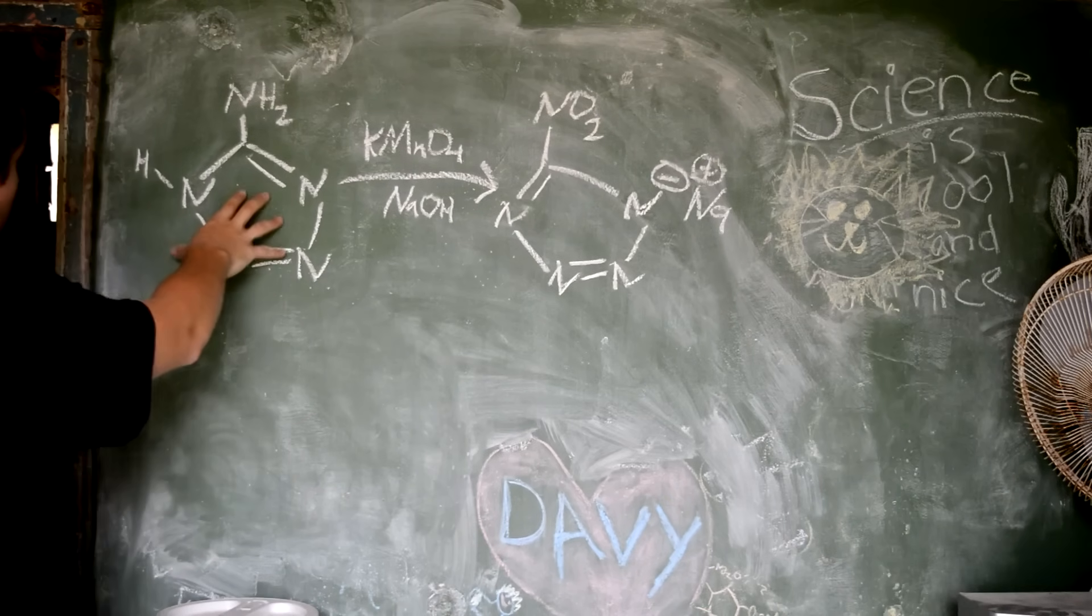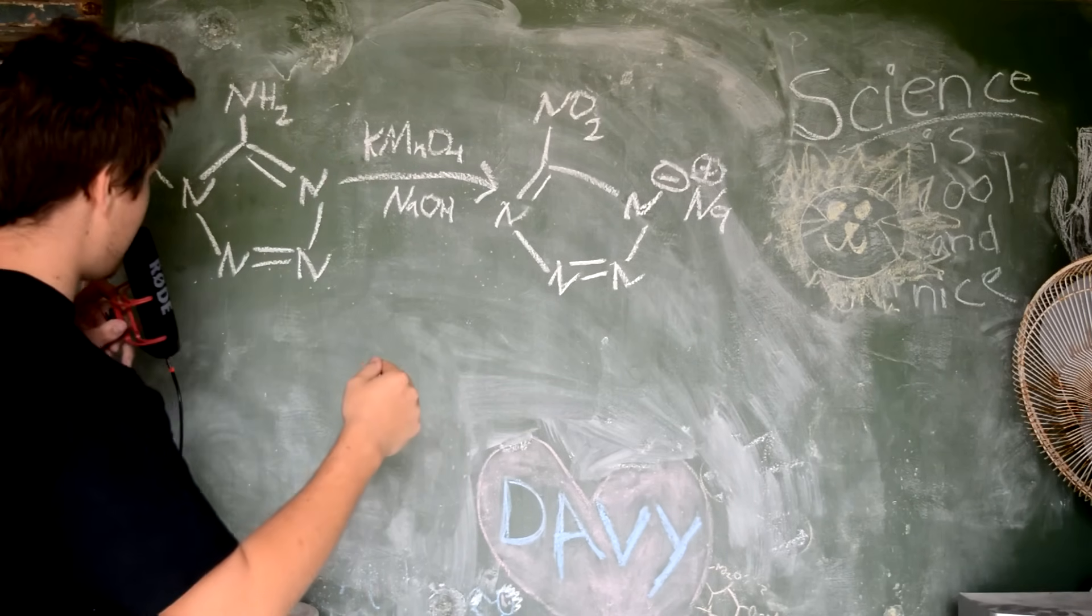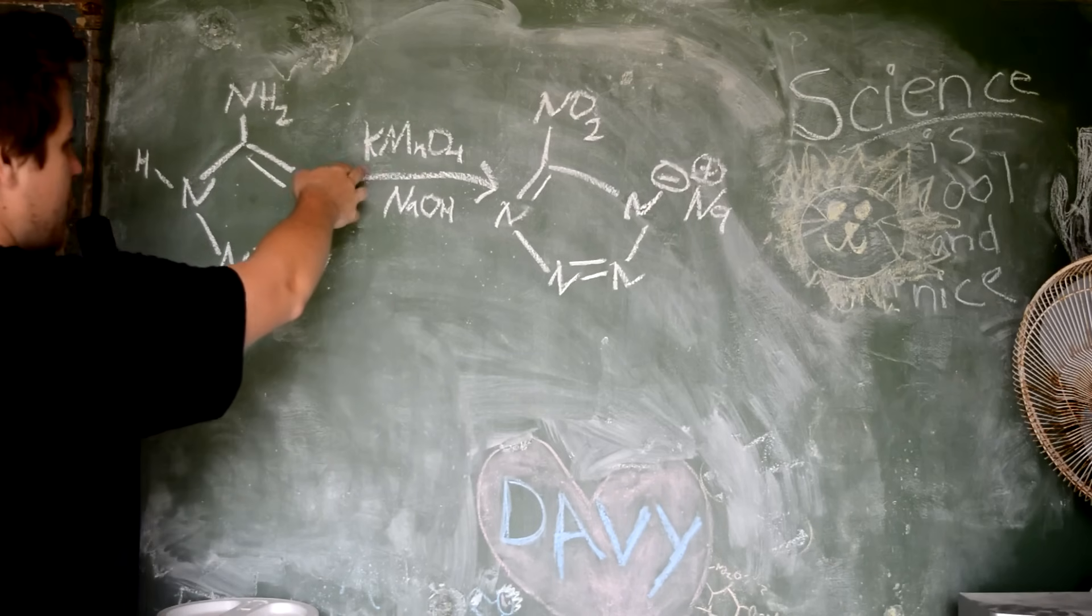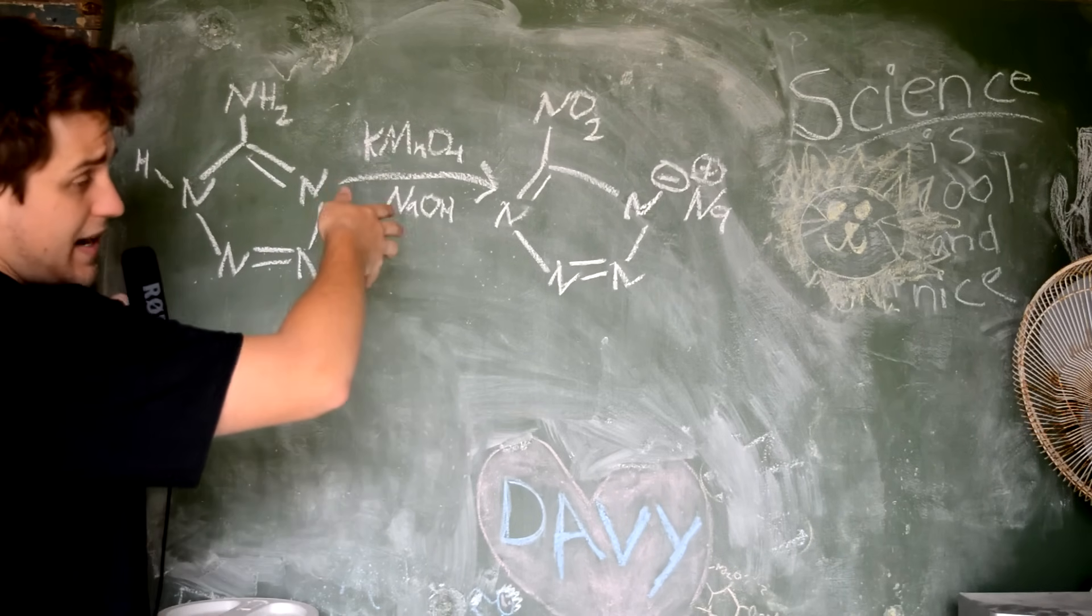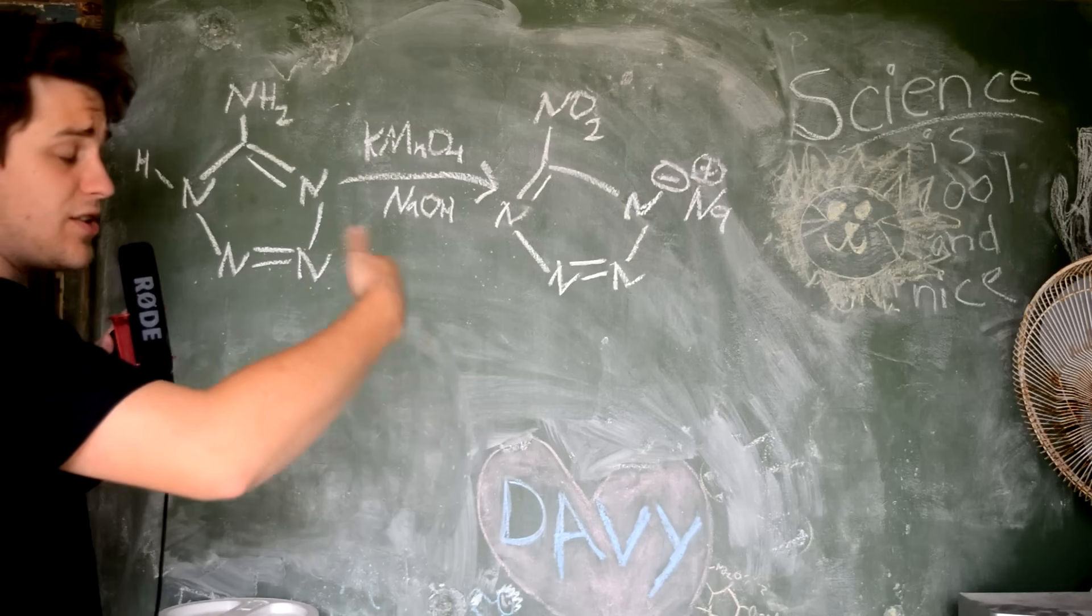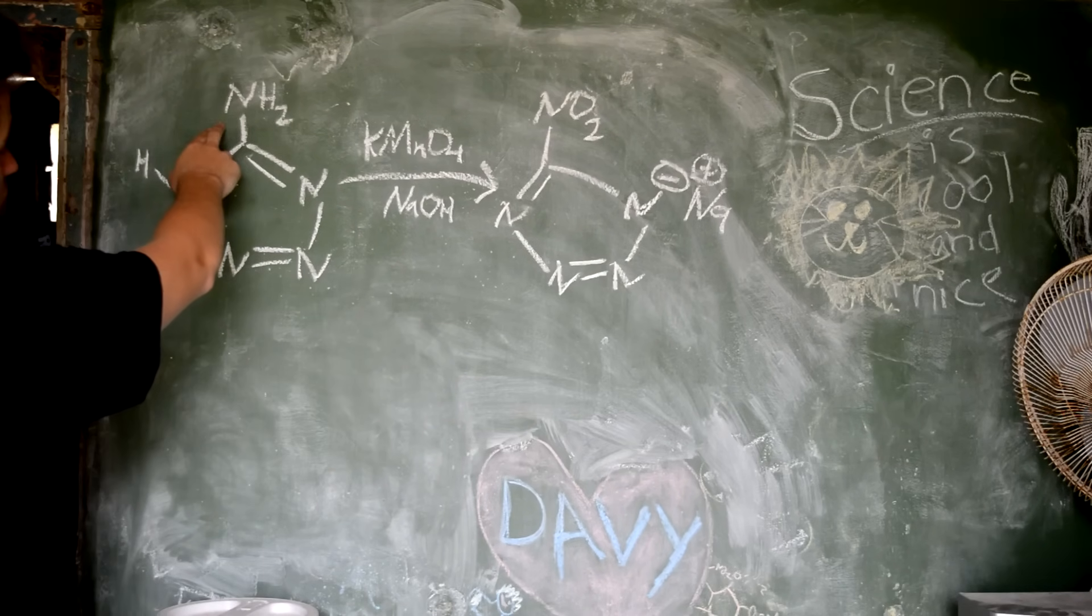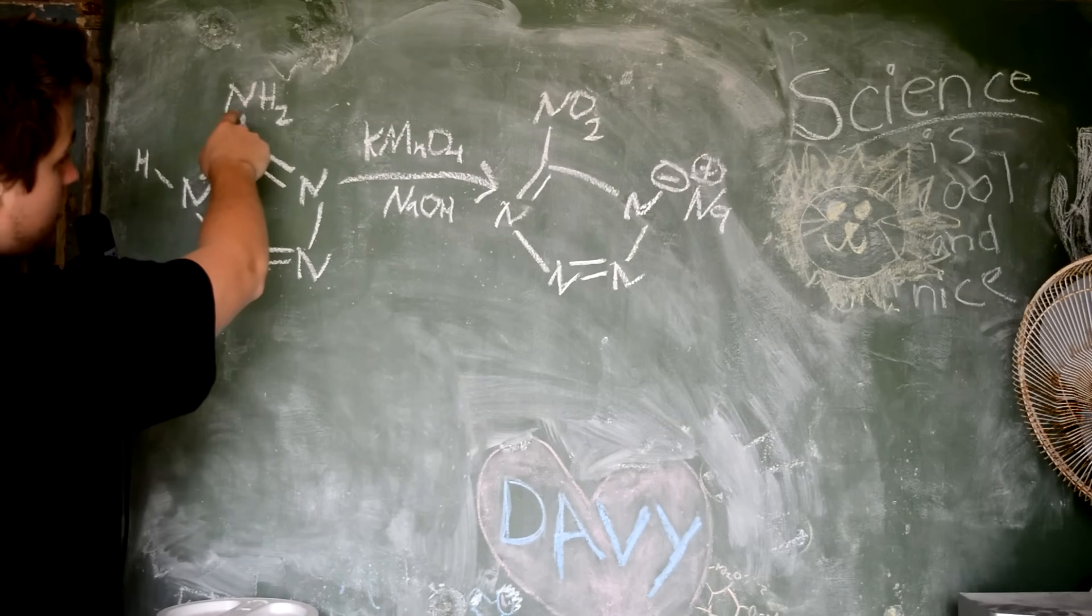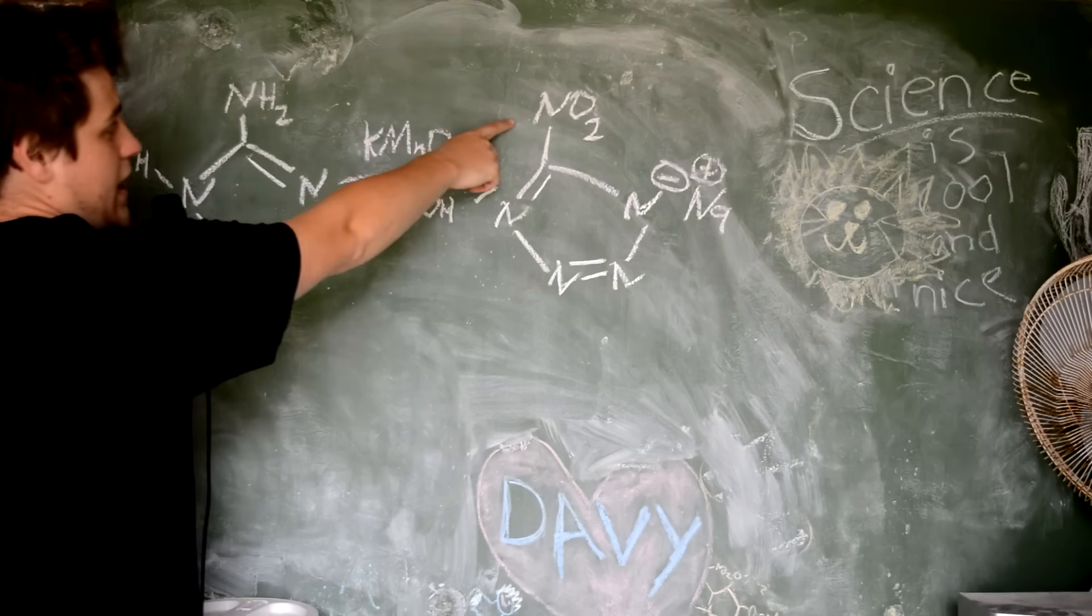Today we're going to be reacting 5-aminotetrazole, which is this compound here, with potassium permanganate. If you have a bit of knowledge about the theory behind potassium permanganate and what kind of reactions it generally tends to do, you'd expect it to oxidize an amine, which is this group here, to a nitrate.